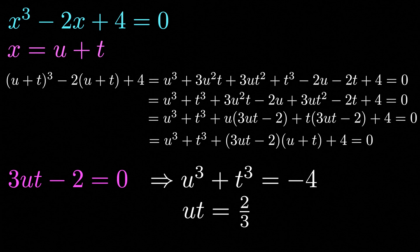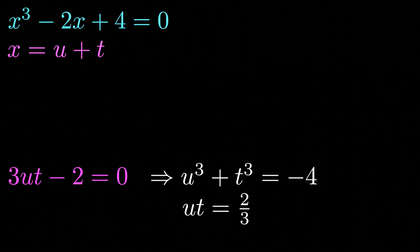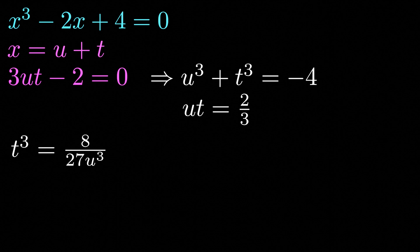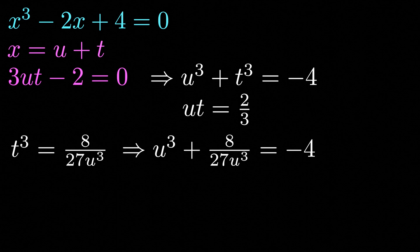Now what we're going to do is rearrange our second equation and solve for t cubed. We have t cubed equals 8 divided by 27 times u cubed. If we substitute this value for t cubed into our first equation, we get u cubed plus 8 divided by 27u cubed equals minus 4. Now if we multiply this equation by u cubed and then add 4u cubed to both sides of our equation, we get u to the sixth power plus 4u cubed plus 8 divided by 27 equals 0.